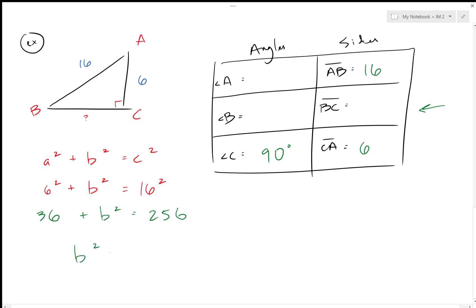We subtract the 36 over, we get 220, and then finally square root both sides. The square root of 220 gives us 14.8.